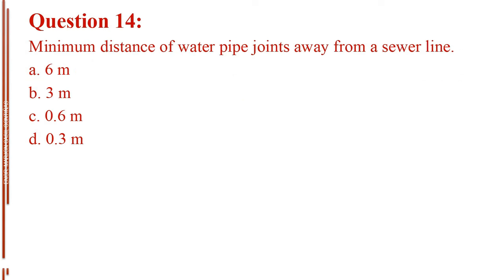Question number 14. Minimum distance of water pipe joints away from a sewer line. Letter A, 6 meters. Letter B, 3 meters. Letter C, 0.6 meter. Letter D, 0.3 meter.